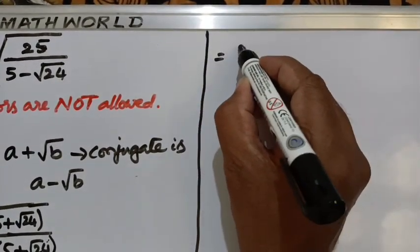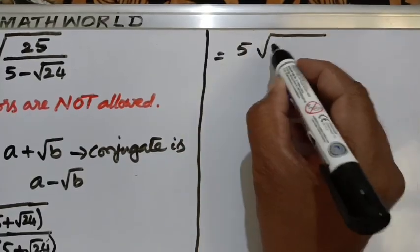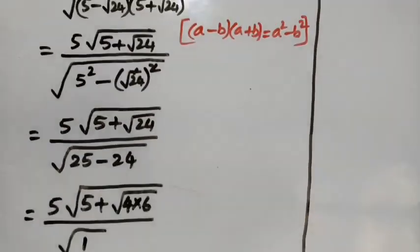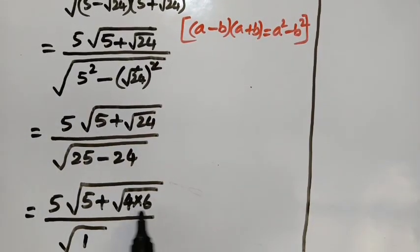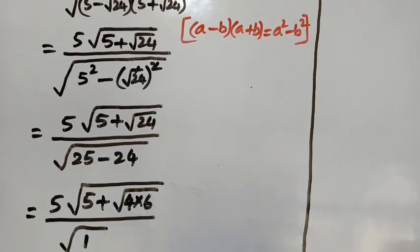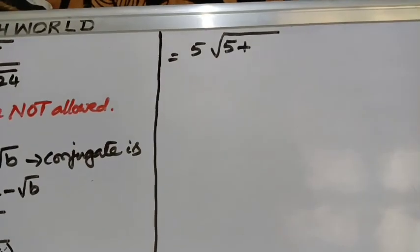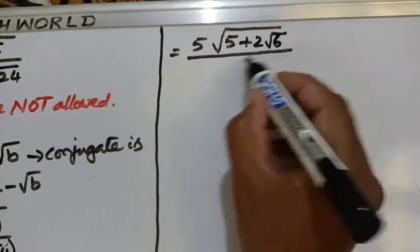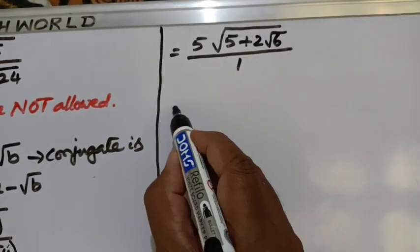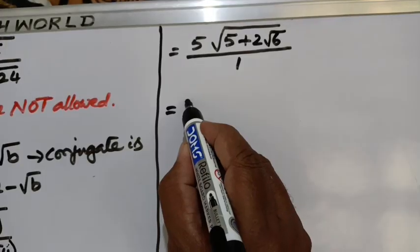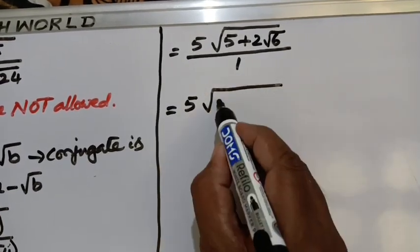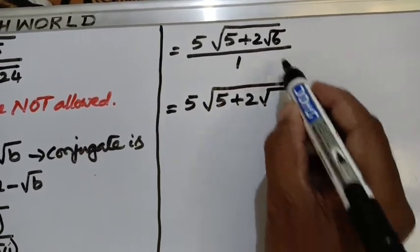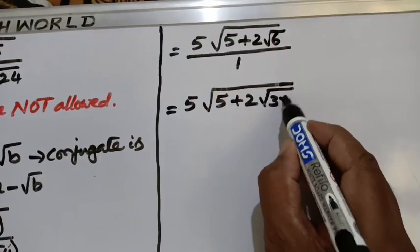So that means the expression is 5 times root 5 plus root 24. We can write 24 as the product of 4 and 6, so root 24 equals root 4 into root 6, and root 4 is 2. So it becomes 5 times root 5 plus 2 root 6, divided by 1. We can write root 6 as root 3 times 2.